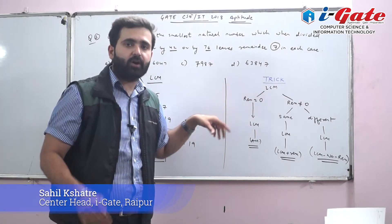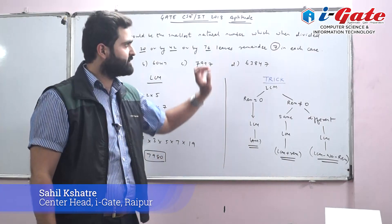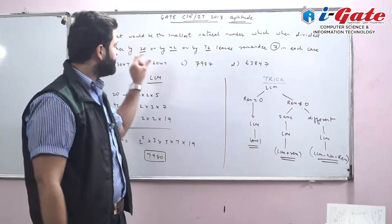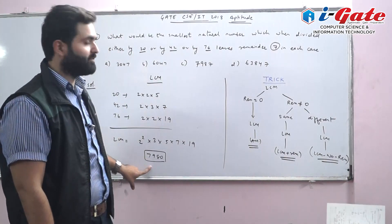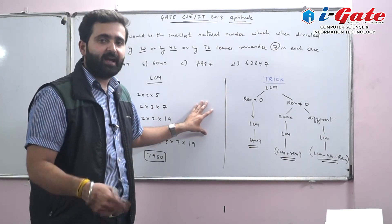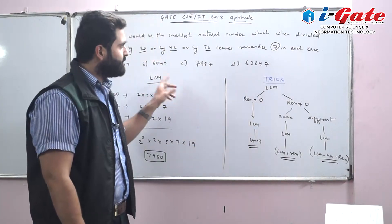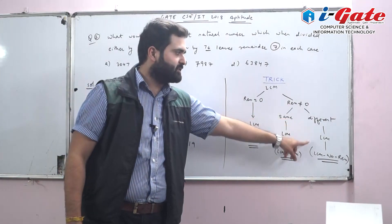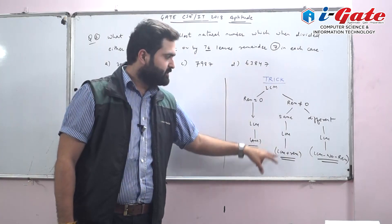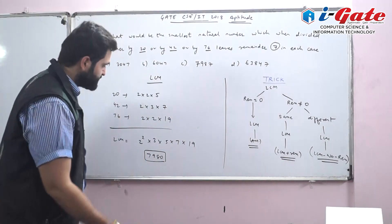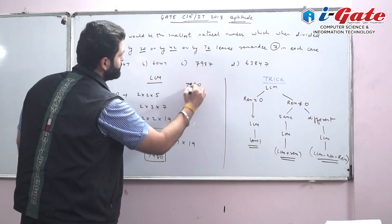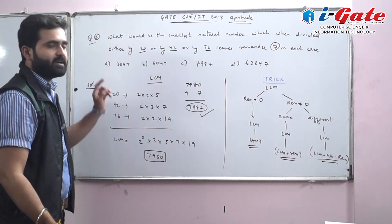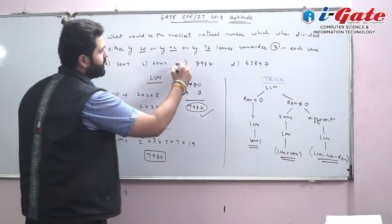The trick: if remainder is 0, LCM is the answer. If remainder is non-zero and same for all divisors, add the remainder to the LCM. Here the remainder is 7 (same for all), so the answer is 7980 + 7 = 7987. Option C is correct.